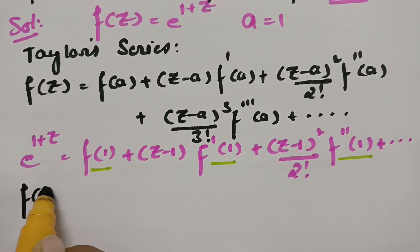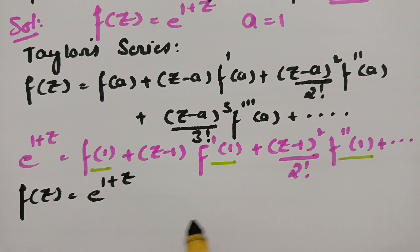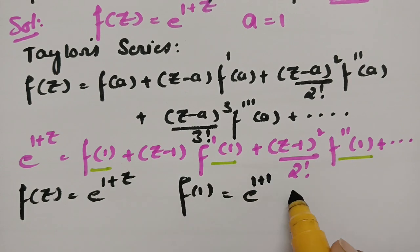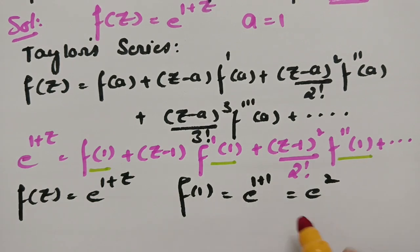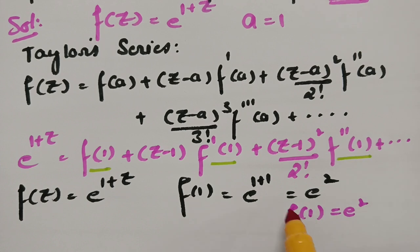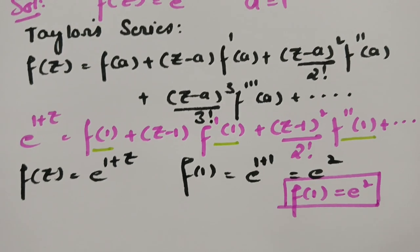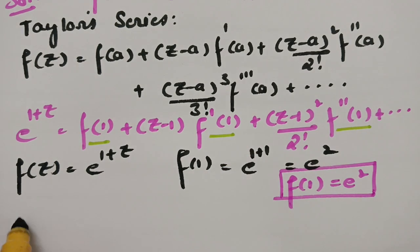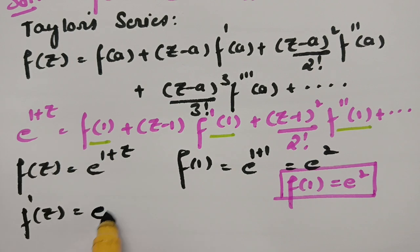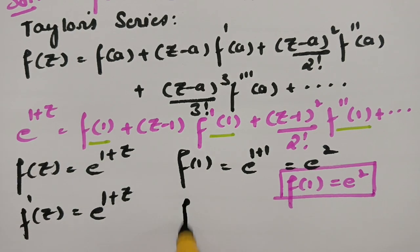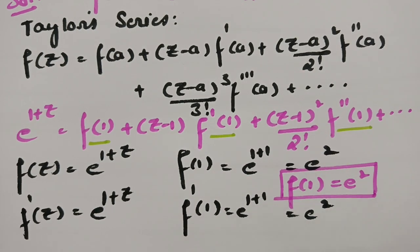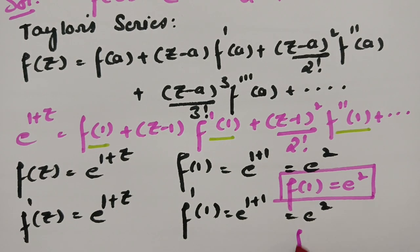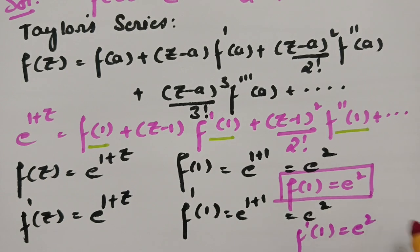f of z is equal to e power 1 plus z. For f of 1, this is e power 1 plus 1, which is equal to e square. For f dash of z, the derivative of e power 1 plus z is again e power 1 plus z. Therefore, f dash of 1 is e power 1 plus 1, which is again e square.